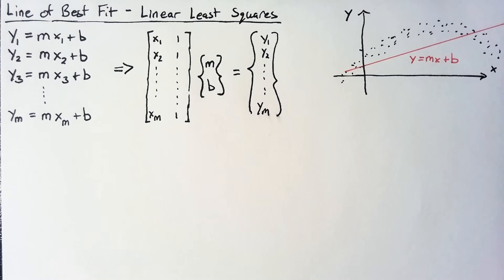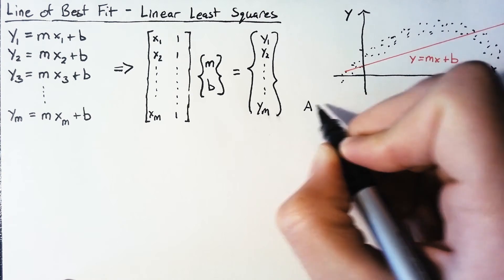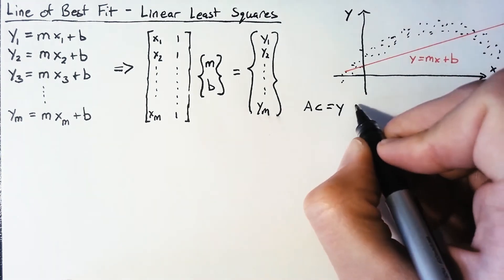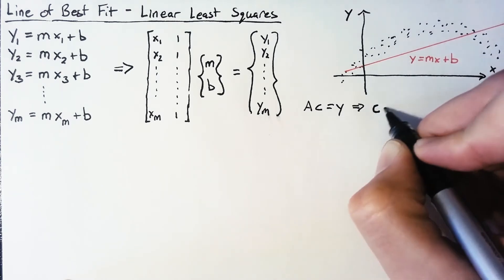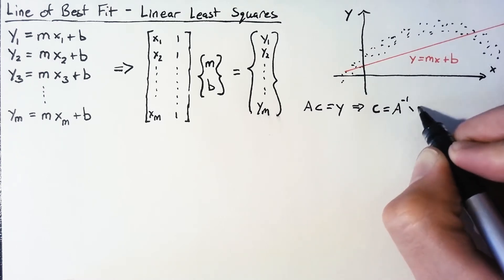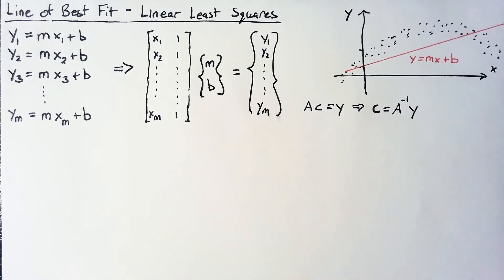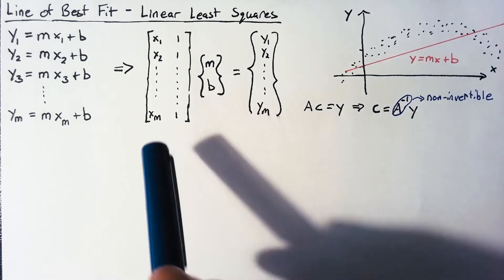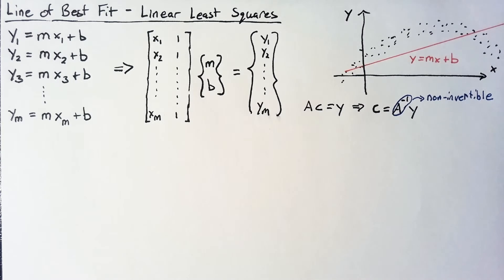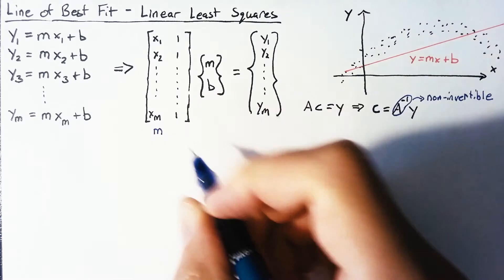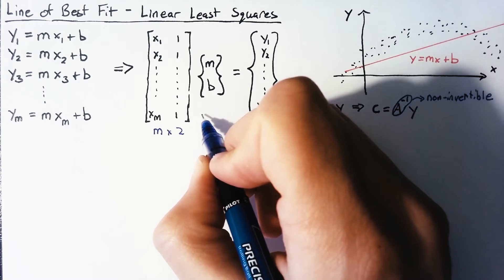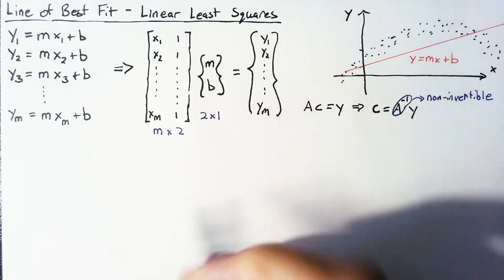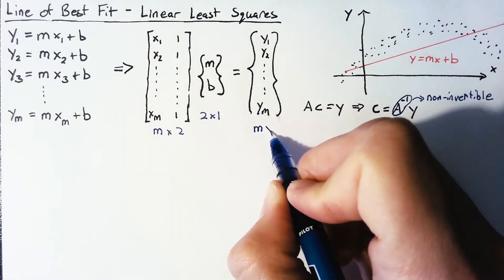Now if we were just to blindly go at this, we would give these some names and we could say that this is A times C is equal to y. And we would want to solve for C, which would say that we have A inverse multiplied by y. The problem here is that A is non-invertible. So this can't work as we have it right now. And the reason that A is non-invertible is because it's not square. So in order to make all this work, we really need a square matrix where A is. So in order to kind of see where we might be able to get a square matrix out of the equations we have, let's just look at the size of the matrices we have right now. A is going to be m rows by two columns. And then C is two rows by one column. We need these numbers to match in order to do the multiplication. And then y is going to be m rows by one column.